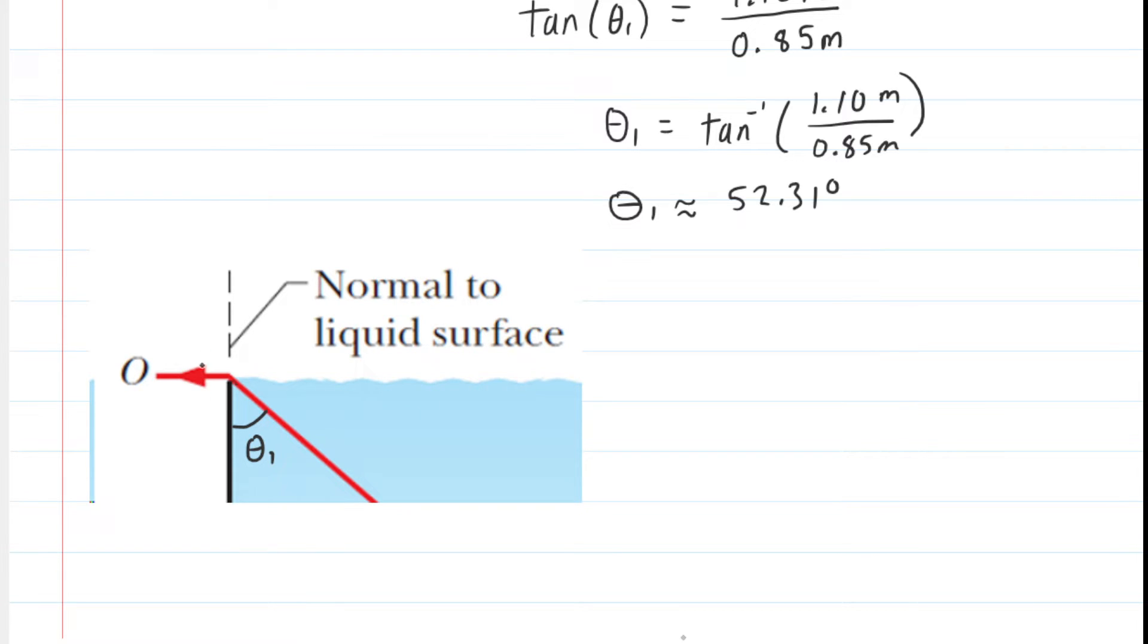If we measure the angle from the normal to the refracted beam of light, we would call that angle theta two. We can see from the diagram that theta two is actually equal to 90 degrees, and that beam of light is refracting into air, which means the index of refraction of that medium is approximately one.